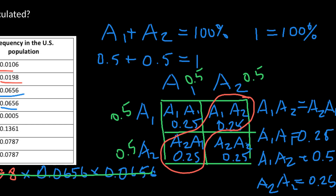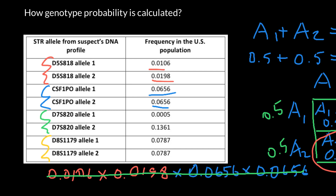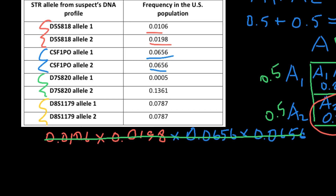Now we can return to our table. We see that the probability of allele 1 and allele 2 at locus 1 are different, which means we have two different alleles here — a heterozygous locus. In our calculations, we have to multiply 0.0106 by 0.0198, and because these two alleles are heterozygous, we also have to multiply by 2, as you remember.